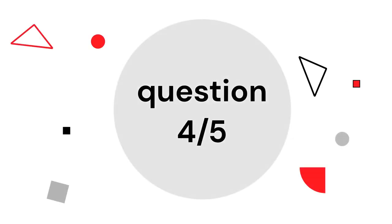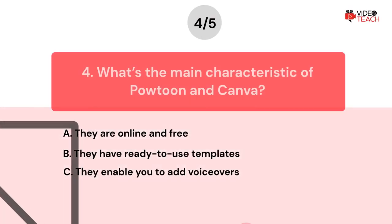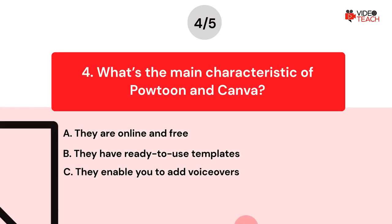Question number four. What's the main characteristic of Powtoon and Canva? Option A: They are online and free. Option B: They have ready-to-use templates. Option C: They enable you to add voiceovers.